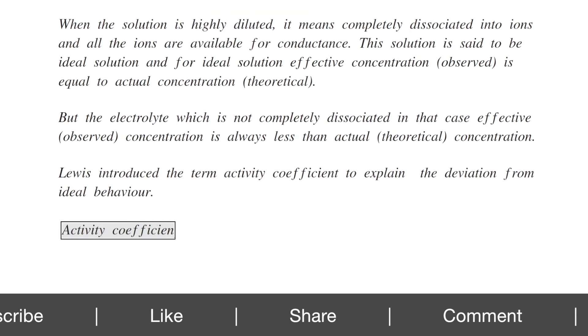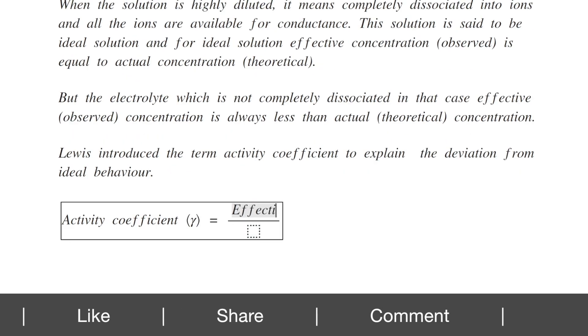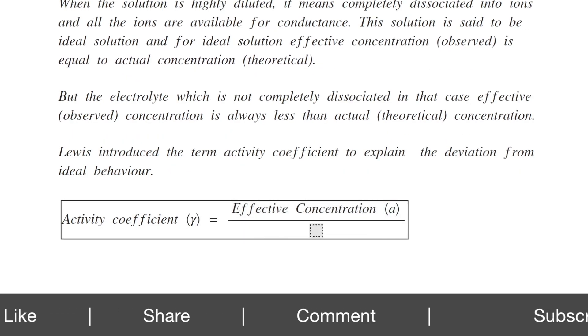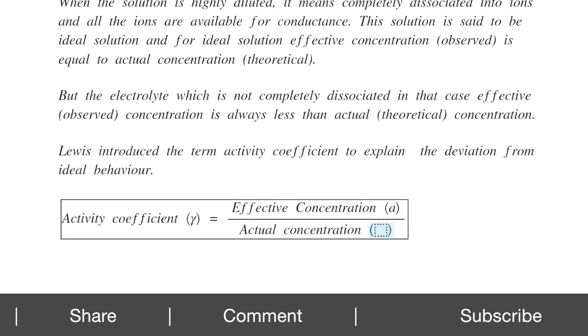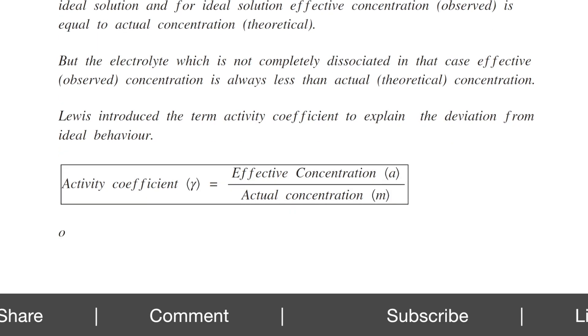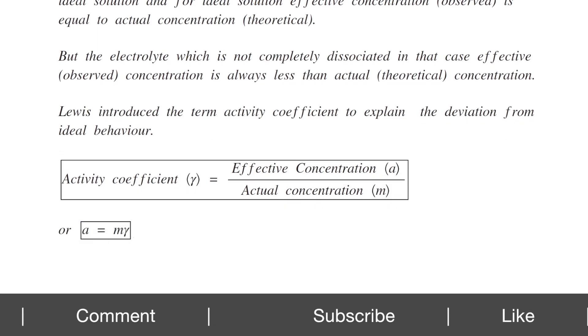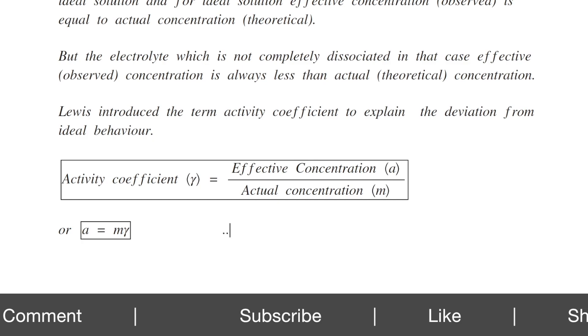The activity coefficient Gamma is defined as effective concentration A divided by actual concentration M, or A equals M times Gamma. This is equation number 1.